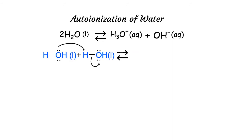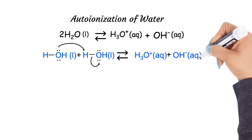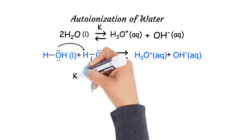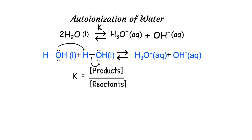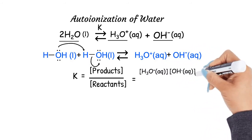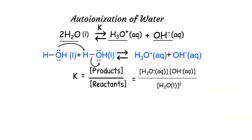The ionization produces a hydronium ion H3O⁺ and a hydroxide ion OH⁻. We can write an equilibrium expression using the equilibrium constant K and the concentrations of reactants and products. The equilibrium constant is given by concentration of products over reactants. On the reactant side we have two water molecules; on the product side we have one hydronium ion and one hydroxide ion. Therefore K equals the concentration of H3O⁺ times the concentration of OH⁻ over the concentration of H2O squared.